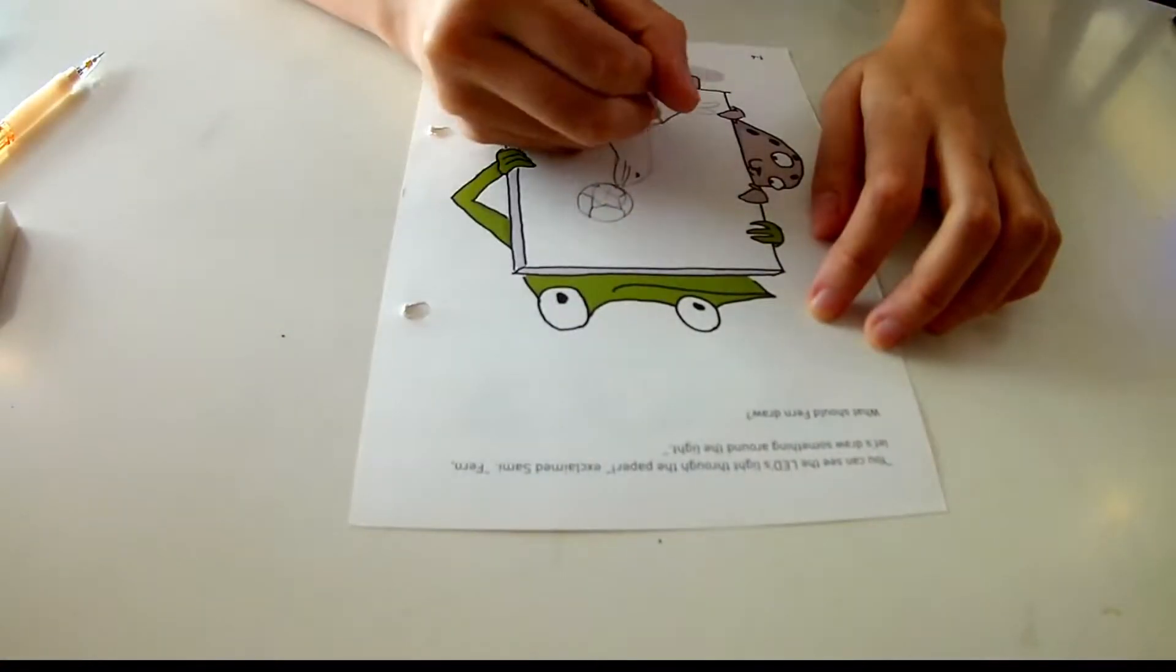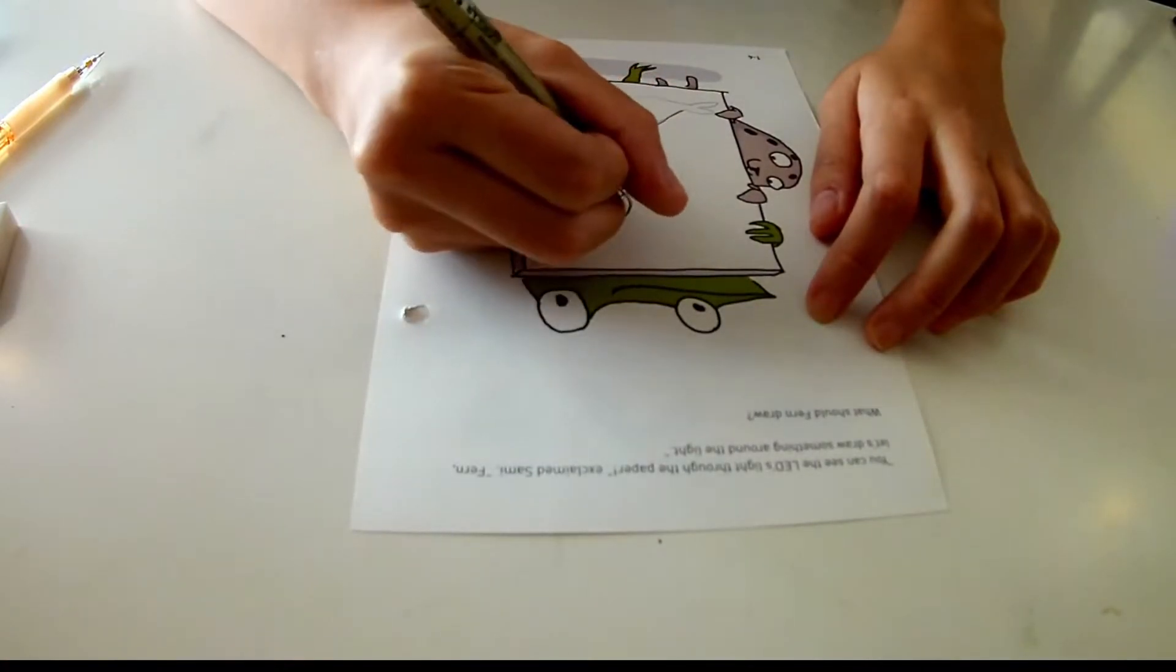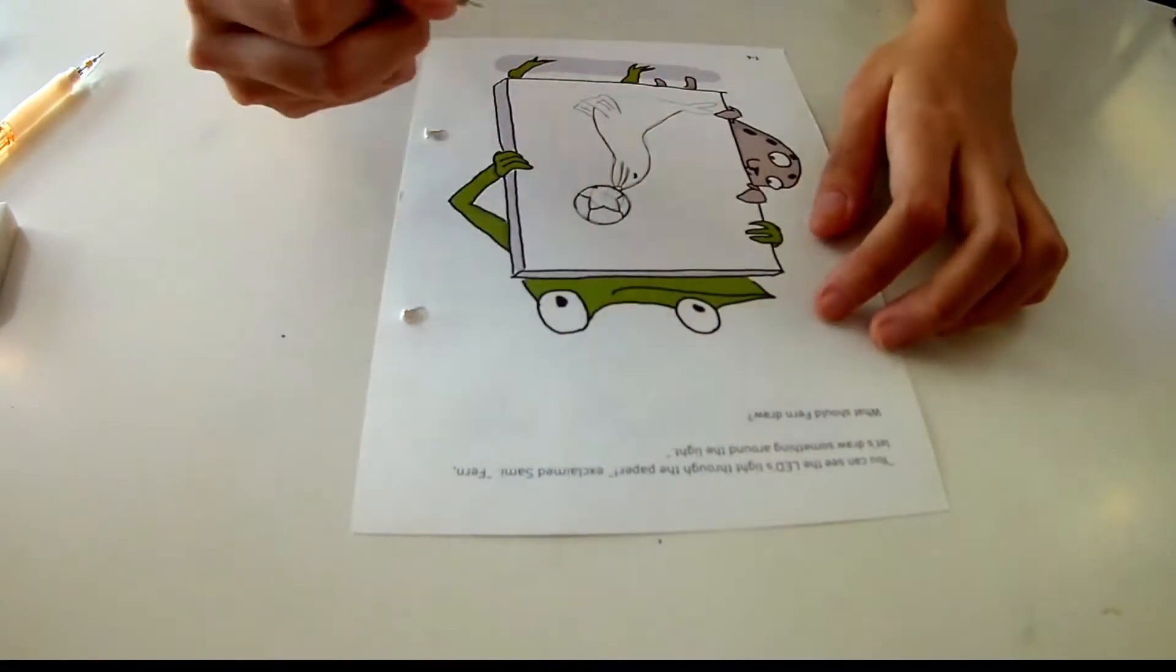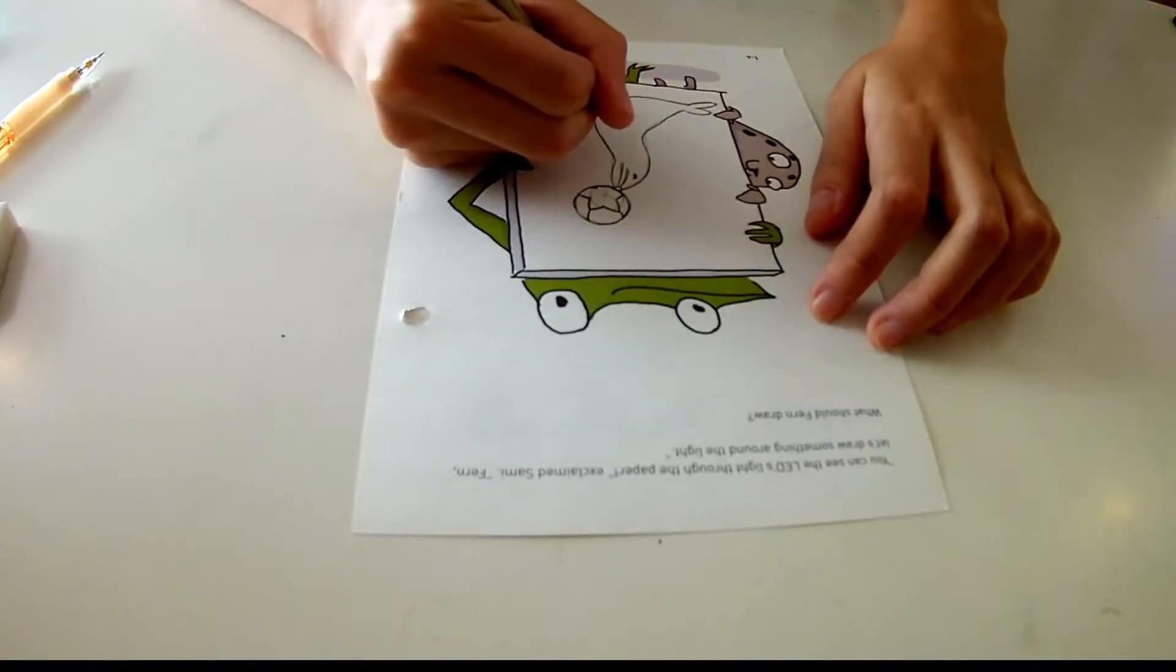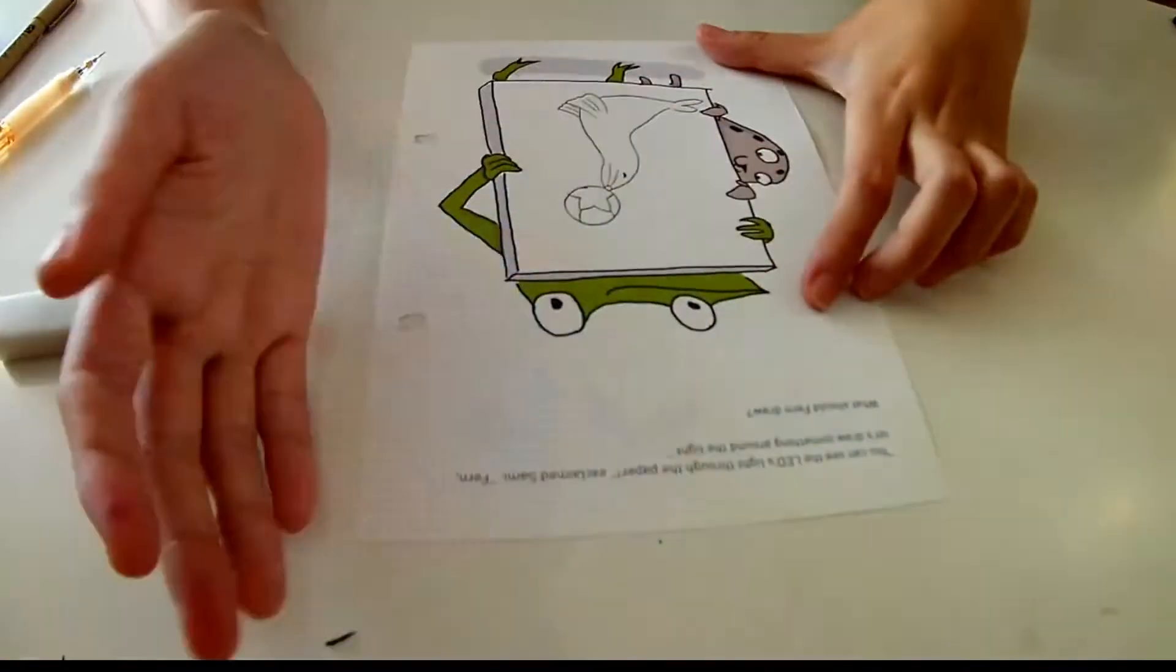Then we ink over the scene using a pen. Once we're finished inking, we can erase the pencil sketch, leaving just the pen outlined.